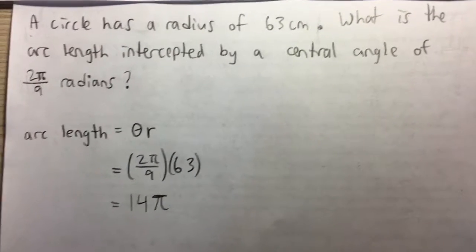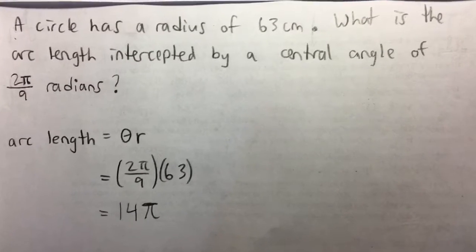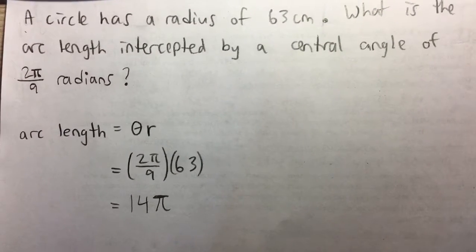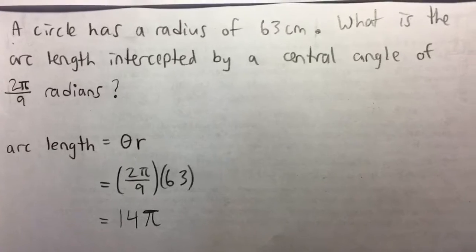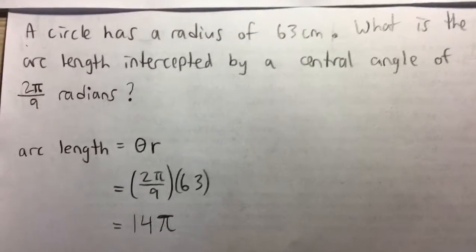A circle has a radius of 63 centimeters. What is the arc length intercepted by a central angle of 2π over 9 radians? So here we have to find the arc length, and let's use the arc length formula.